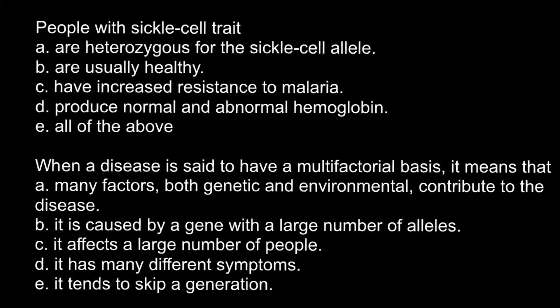People with sickle cell trait — and here are the five answers to choose from. Answer A: are heterozygous for the sickle cell allele. Answer B: are usually healthy. Answer C: have increased resistance to malaria. Answer D: produce normal and abnormal hemoglobin. And answer E: all of the above. The correct answer would be E.